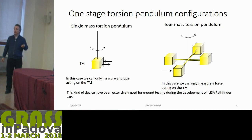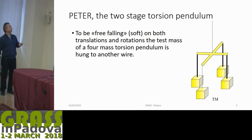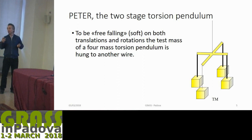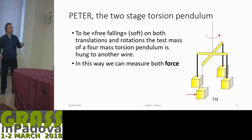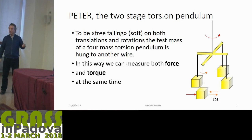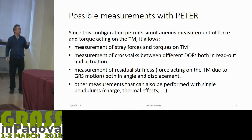This device has been extensively used for ground testing during the development of LISA Pathfinder in Trento. Starting from the four-mass torsion pendulum, we built a two-stage torsion pendulum as depicted here. To make it soft — free-falling — in one direction, both in translation and rotation, we hang one of the four masses of the torsion pendulum to another wire. In this way, we can measure both force by pushing the mass and torque by rotating the mass along the second fiber simultaneously.